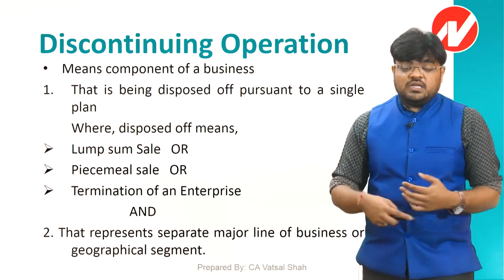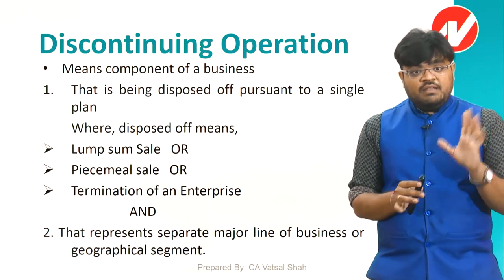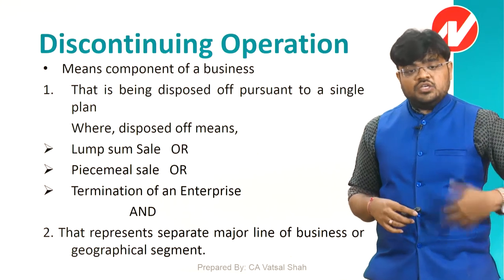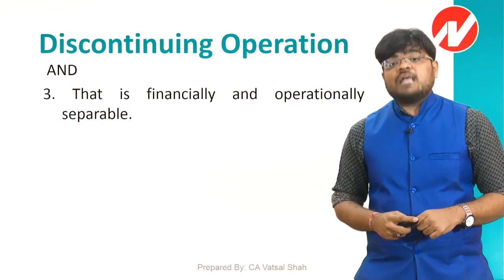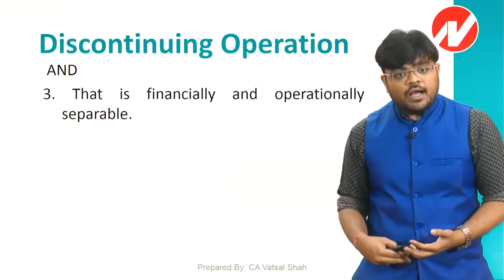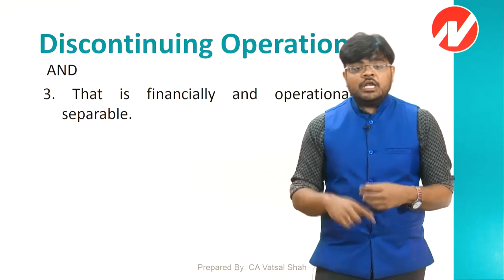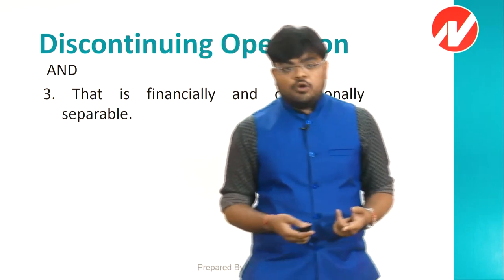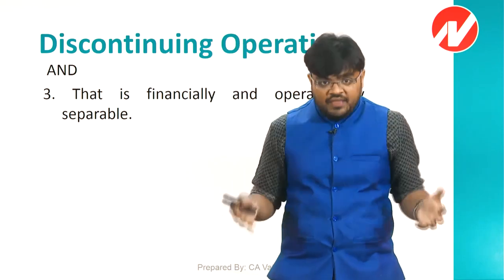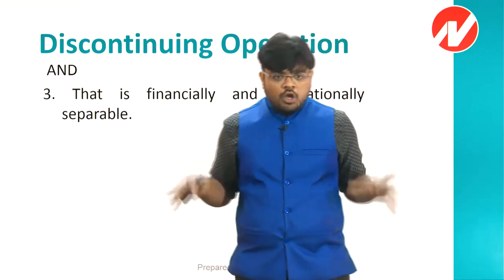The discontinuing operation must represent a separate major line of business or geographical segment. And importantly — AS-24 requires this if the operation meets AS-17's definition of a segment. The third and most important condition is that the operation must be financially and operationally separable. Only then can you separately show profit from continuing operation and profit from discontinuing operation in the P&L.